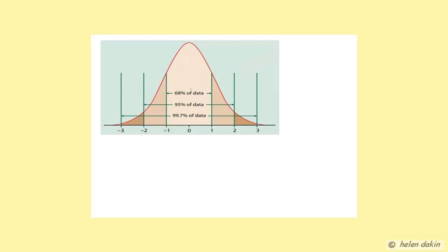For the middle 68% of the data, we know that falls within one standard deviation of the mean. The mean, or average lifespan of the batteries, is 25 hours, and the standard deviation is 1.3 hours. So the middle of the distribution is 25 hours, and the standard deviation is 1.3.